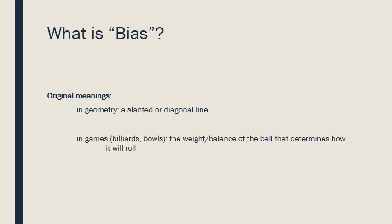First, let's talk about what bias is. What do we mean when we say something is biased? It's useful to think about the original meanings. Bias originally in geometry meant a line that was slanted rather than straight. In games like billiards or bowls, it's the weight or balance of the ball that determines how it will roll — to one side or the other.